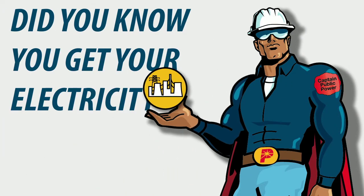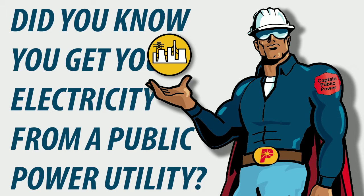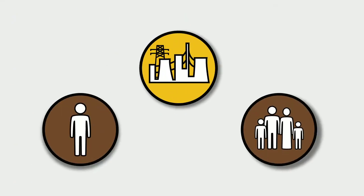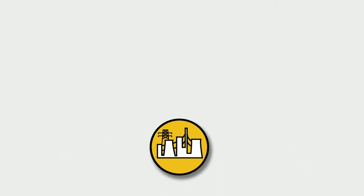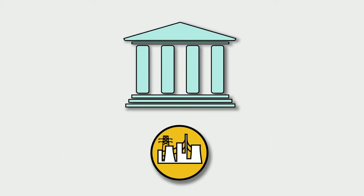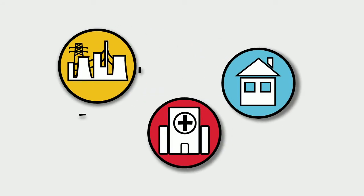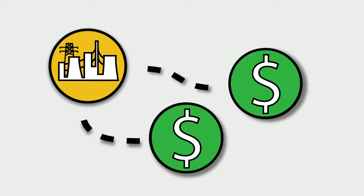Did you know you get your electricity from a public power utility? That means you and your neighbors own the utility. Your local government runs the utility just like they run schools and libraries. Your public power utility is here to serve you, not to make a profit.